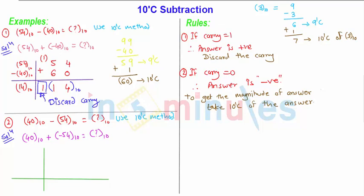So in the normal format, I have 40 minus 54, so the answer is minus 14. This is a normal subtraction. What we're doing here in digital, particularly in 10th complement format, 40 will be written as it is. So it is 40.